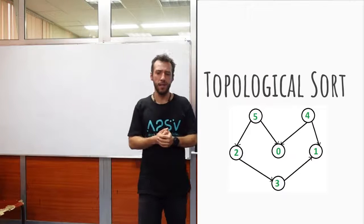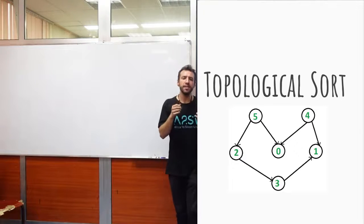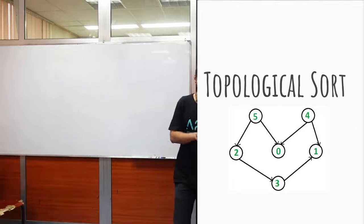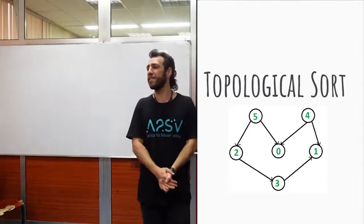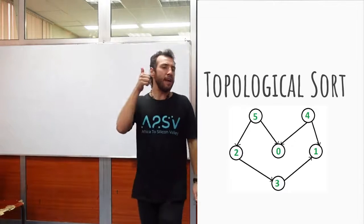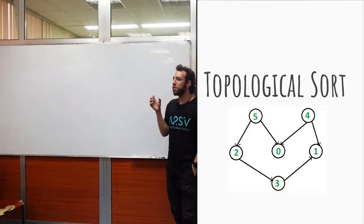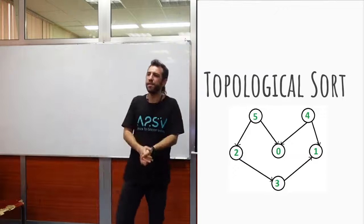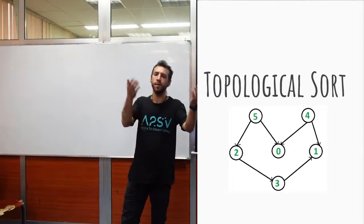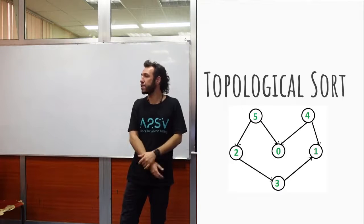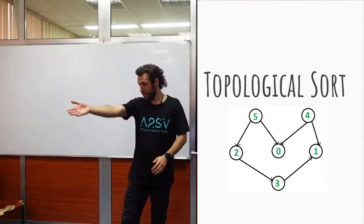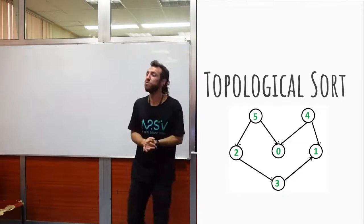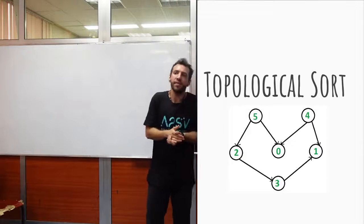Now let's go back to the definition: topological sort is defined on directed acyclic graphs. The graph has to be directed, meaning our edges are one way. Think about it — if there are two-way dependencies, how can we resolve the situation? If A is depending on B and B is depending on A, where are you going to start the execution from? The dependency wouldn't make sense. That's why it is defined on directed graphs.